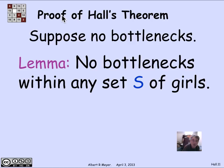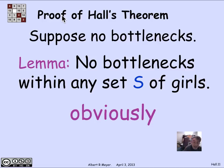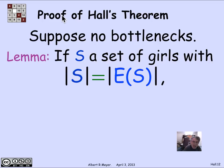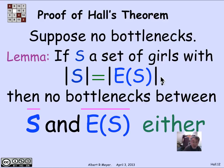Suppose there are no bottlenecks in bipartite graph H. In particular, if you restrict yourself to some set S of girls, no subset of that set S will have a bottleneck — a bottleneck within S would be a bottleneck in the whole graph. What's not trivial is this: suppose you have a set of girls where the number of compatible boys equals the number of girls — |S| = |E(S)|. We can argue there are no bottlenecks within the complement of S and the complement of E(S) either.